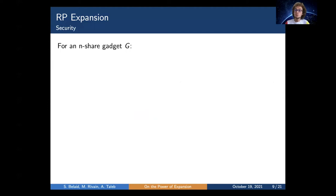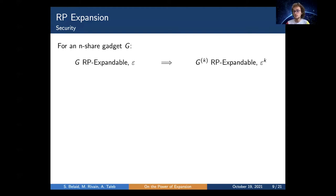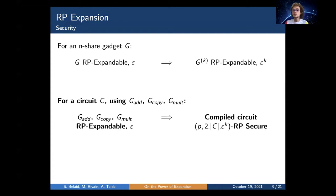It has been proven in the previous work that if a gadget is random probing expandable with failure probability epsilon, then the K-times expanded gadget is also expandable with failure probability epsilon to the power K. So compiling a circuit C with base gadgets that are all random probing expandable outputs a compiled circuit that is random probing secure with failure probability reduced according to the expansion level K.